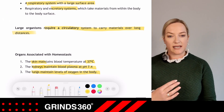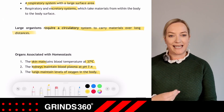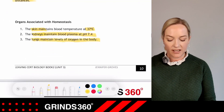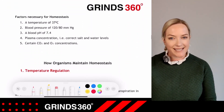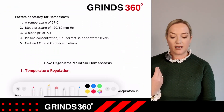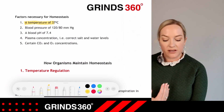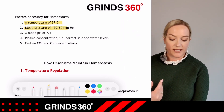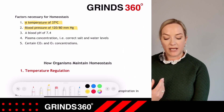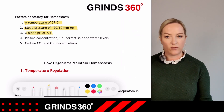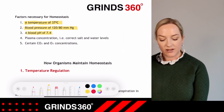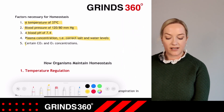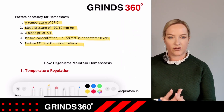Factors necessary for homeostasis include a temperature of 37°C, blood pressure of 120 over 80, a blood pH of 7.4, correct plasma concentration — that is the correct water and salt balances — and certain CO₂ and oxygen concentrations.